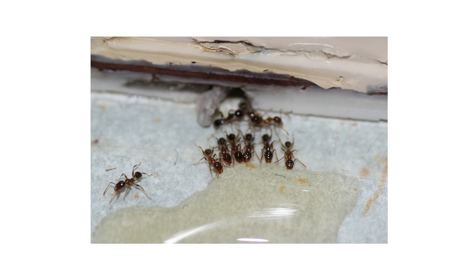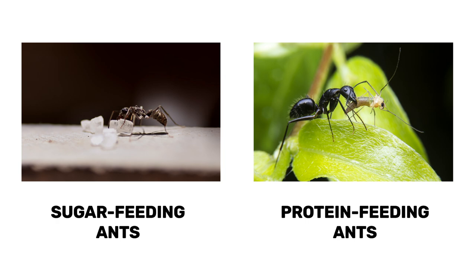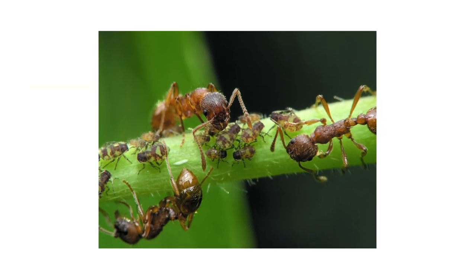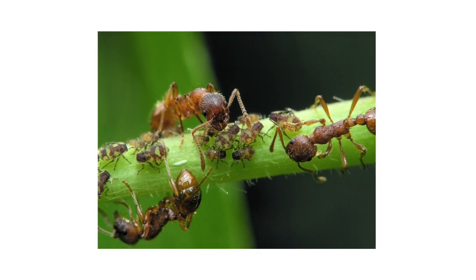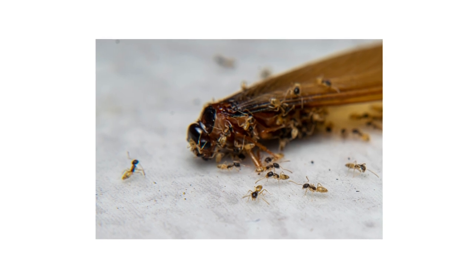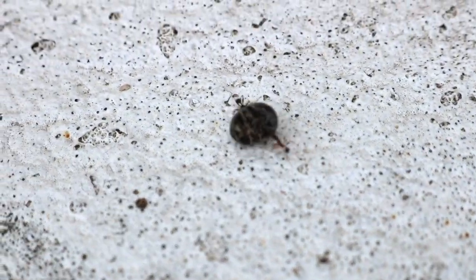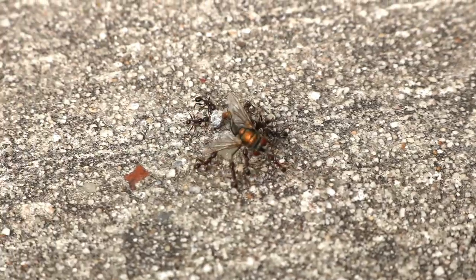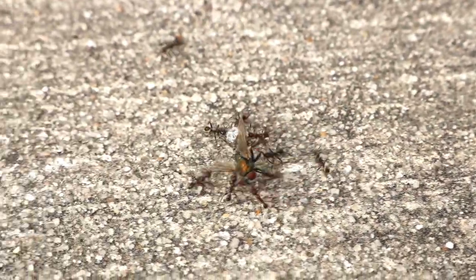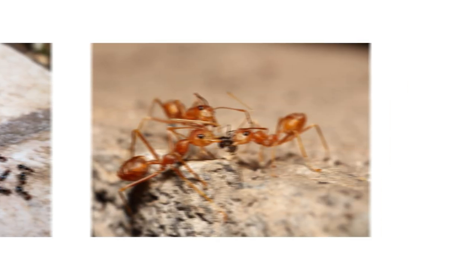Some baits have advantages over others. Generally, ants fall into one of two categories: sugar-feeding ants or protein-feeding ants. Sugar ants seek out sugary foods including honeydew produced by aphids or scales, fruit, or spilled juice. Protein-feeding ants are known to feed on other insects, meats, greasy foods, breads, and more. Keep in mind that many ants don't exclusively feed on just sugars or just meats. Before applying any ant bait, it's important to determine what species of ant you're dealing with so you can determine which bait is best for you.